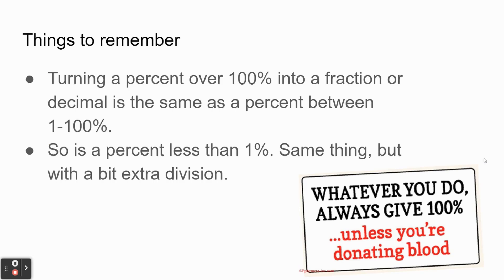So things to remember from this video. Whenever you are turning a percent over 100% into a fraction or decimal, you use the exact same method as making a percent between 1 and 100 into a fraction or decimal. There's nothing different. There's nothing new that we didn't know from the last video. It's the same thing. Just remember, when you make your fraction, make sure to simplify it if you can.